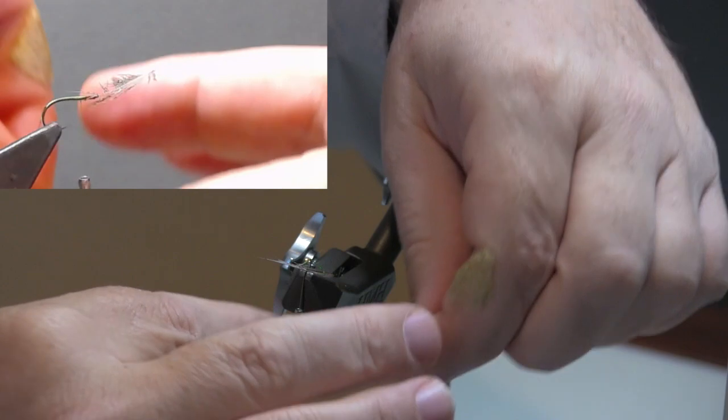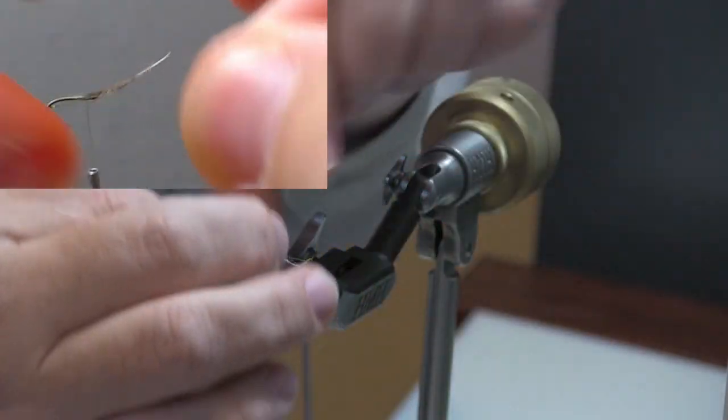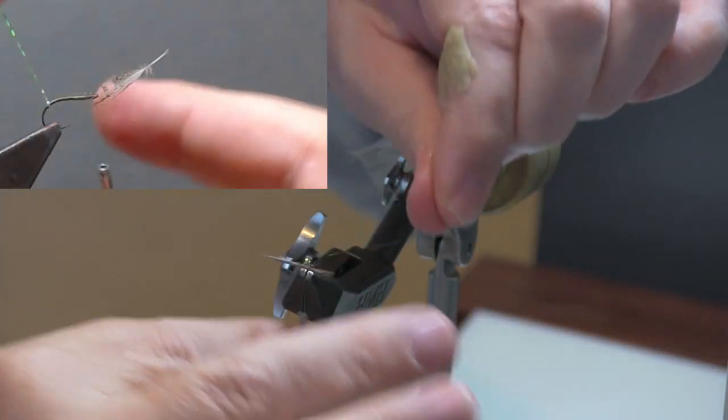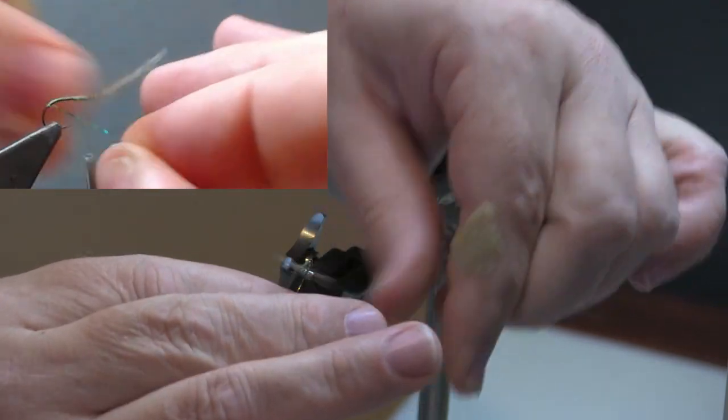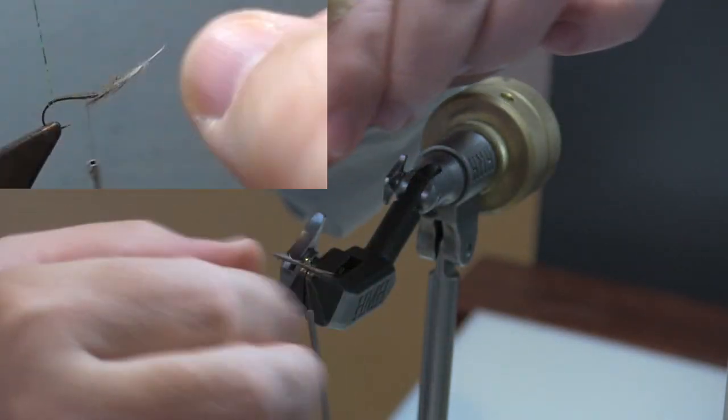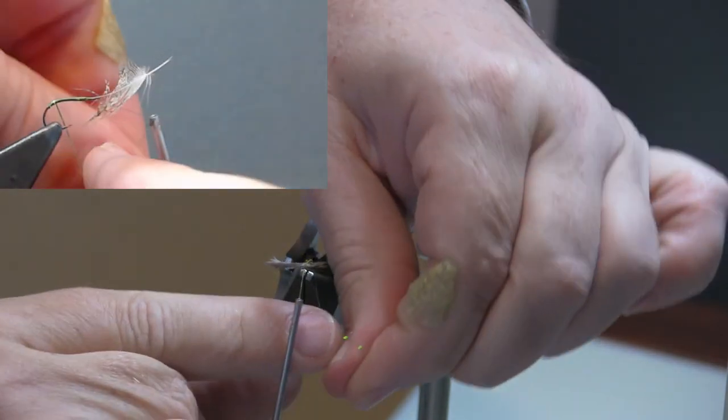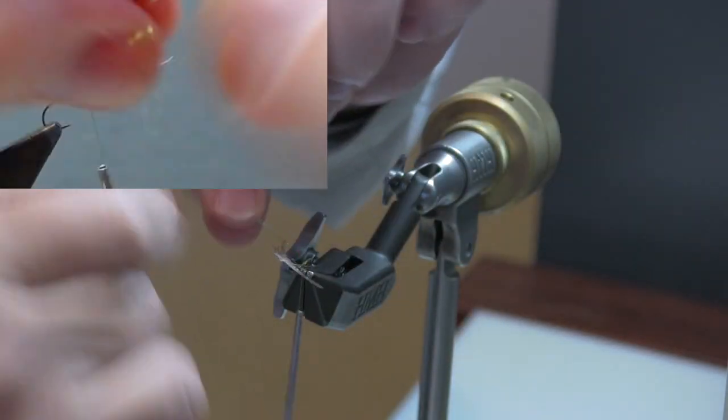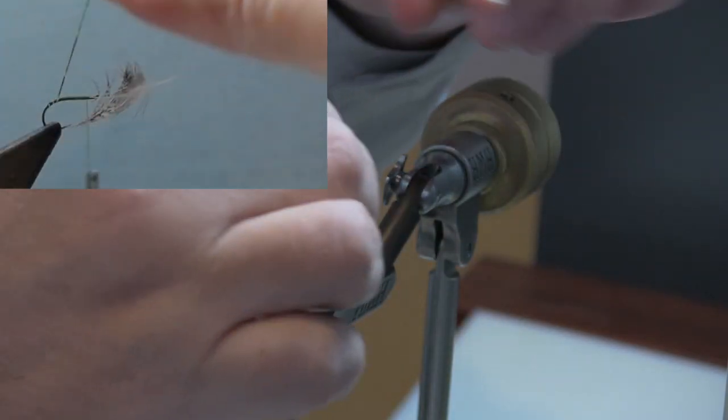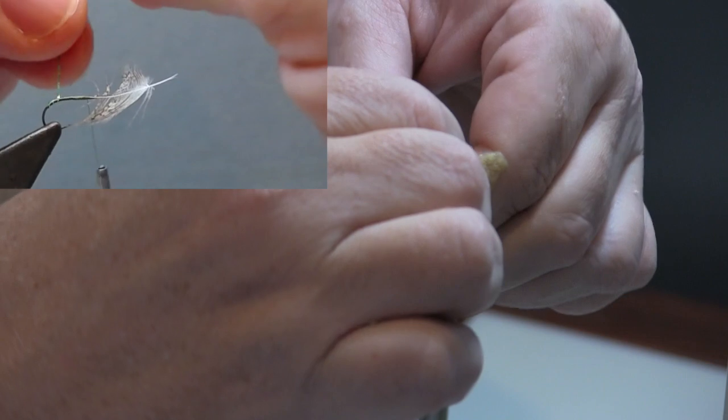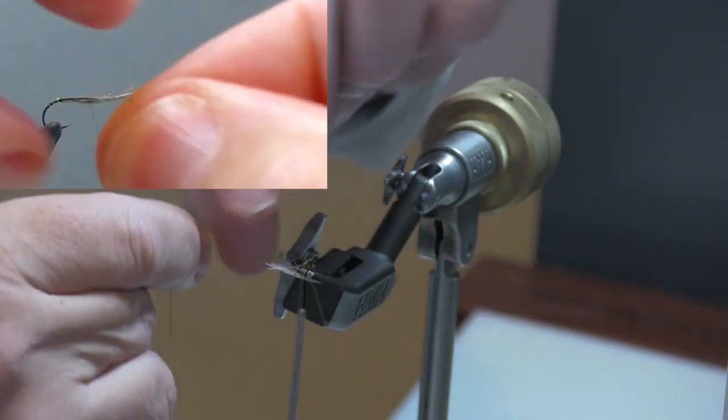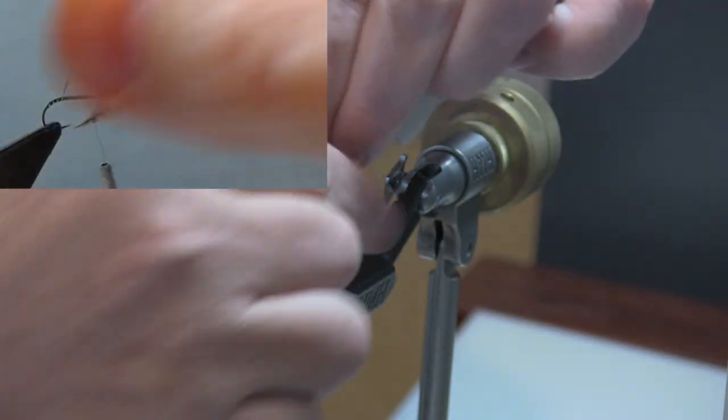Once I have that in place, now I'm going to go ahead and start to spiral that tinsel up the body. Leaving small gaps, small but consistent gaps, so that the thread does show through.